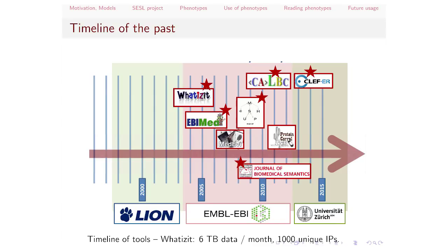For the tools and solutions, the core engine is called 'What Is It?' — an engine which allows you to submit text and then identifies all kinds of entities. It's still quite popular: there's something like six terabytes of data transfer per month and around 1,000 IPs hooked up with it. This is the solution I'm best known for.